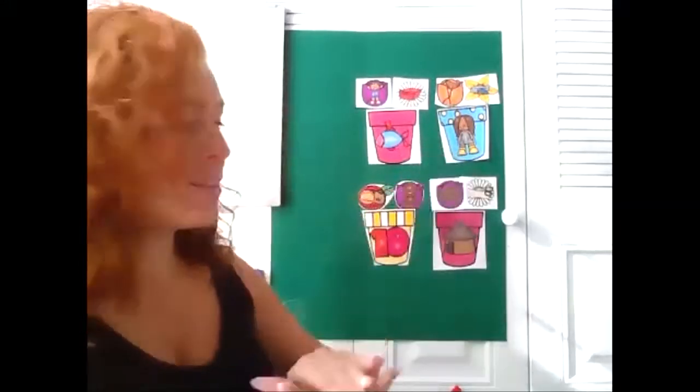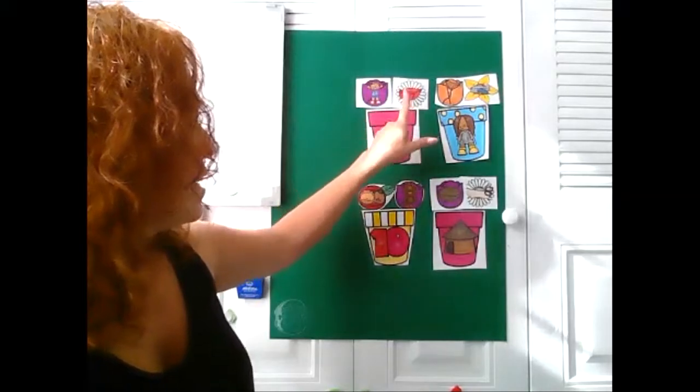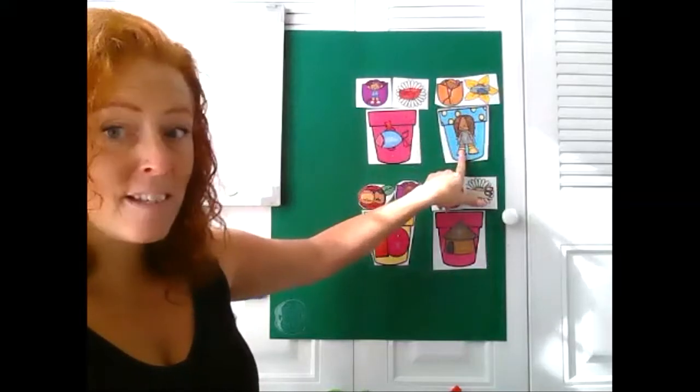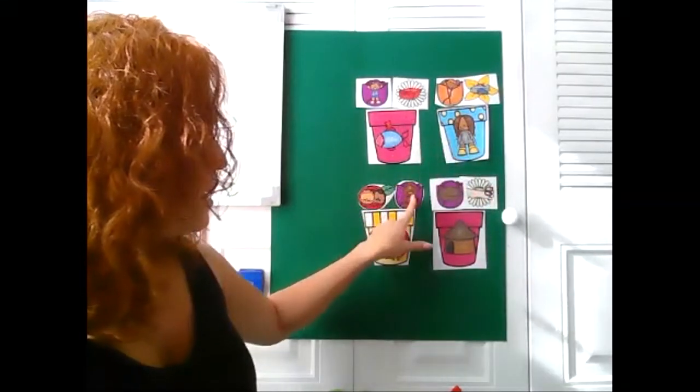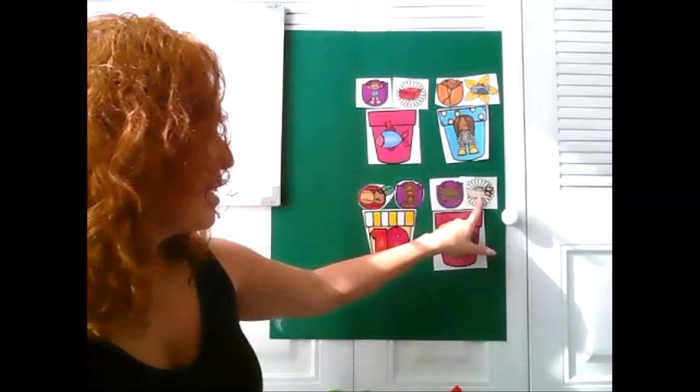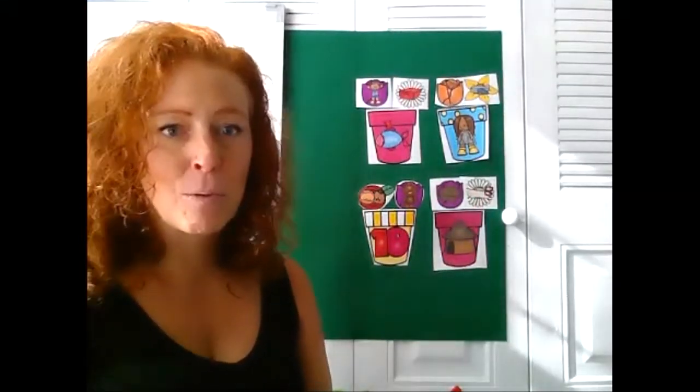Good job, my friends. Let's go over the rhyming words. Ready? Win. Been. Fin. Net. Jet. Wet. Men. Hen. Ten. And nut. Cut. Hut. Look at all those rhyming words that we were able to do. You guys are so smart, and I am so proud of you.